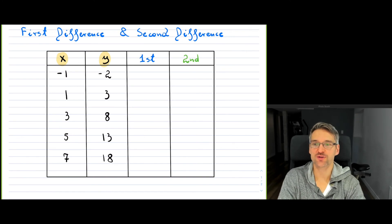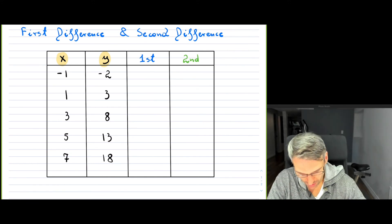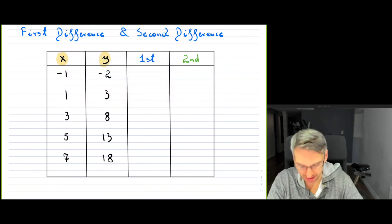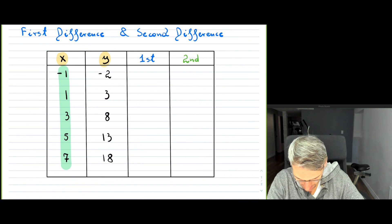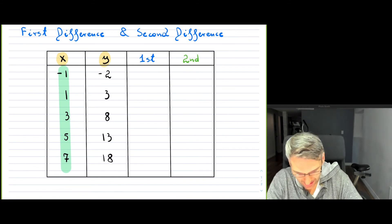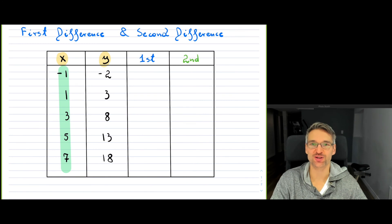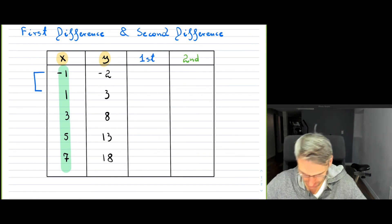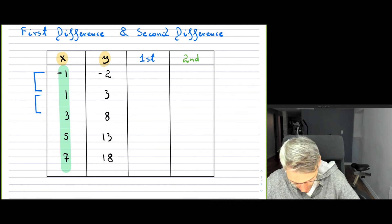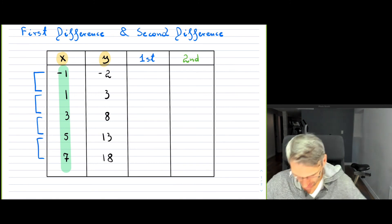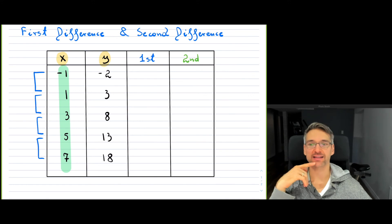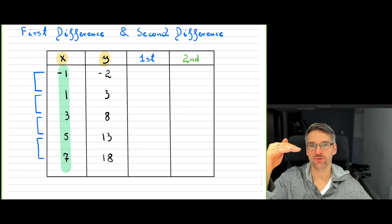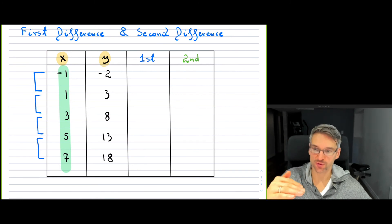For the first difference, the key thing is that when you look at your independent variable — your x column — you first have to ensure that the difference, which is basically the subtraction between two consecutive numbers, is the same throughout. Notice that from negative one to one it's going up two, from one to three it's two, from three to five it's two, and so on.